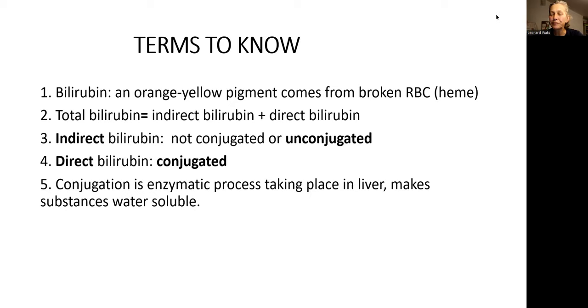Direct bilirubin is conjugated, meaning it went through the process of conjugation. Conjugation is an enzymatic process that takes place in the liver and it makes substances more soluble. When red blood cells or erythrocytes break and the heme gets released into the bloodstream, it floats in the blood and because of its shape it cannot go through the liver easily — it gets stuck. With conjugation it becomes more water-soluble, becomes direct bilirubin, goes easier through the liver, gets excreted into the gallbladder, and can also get excreted through the kidney.